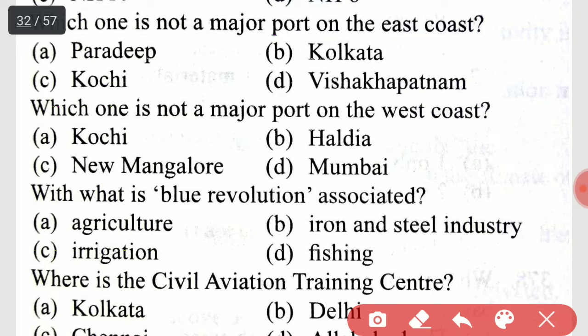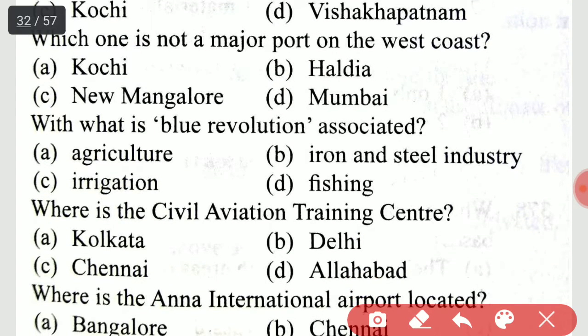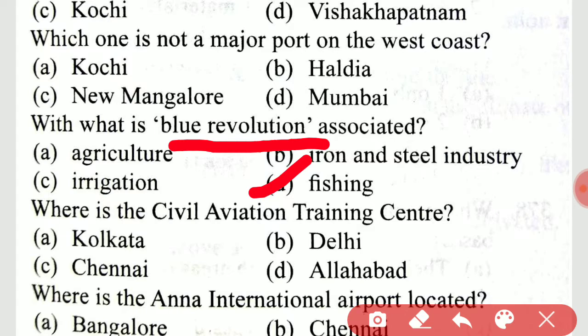Which one is not a major port on the west coast? That is option B, Haldia. Next, with what is the Blue Revolution associated? The Blue Revolution is associated with fishing.